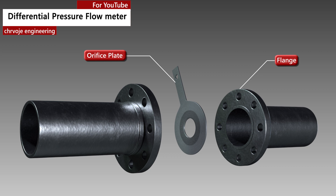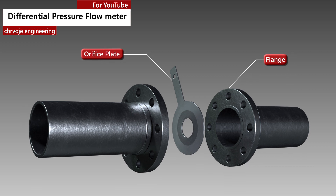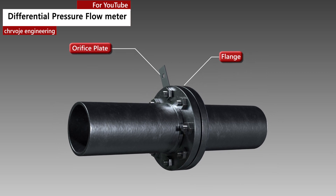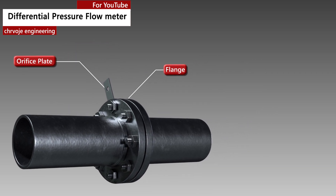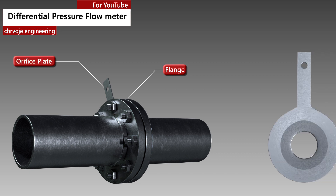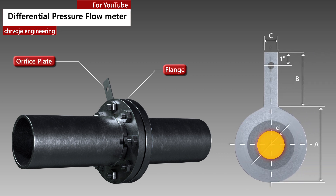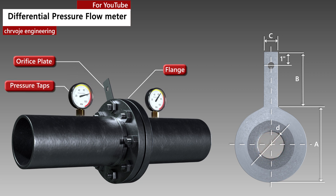The orifice plate is an in-line instrument that is installed between two pipe flanges. It is comprised of a circular metal disk with a specific hole diameter that reduces the fluid flow in the pipe. Pressure taps are added on each side of the orifice plate to measure the pressure differential.